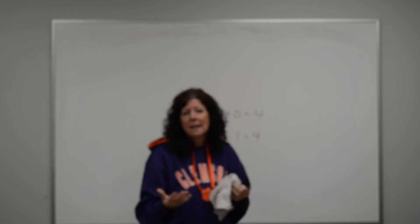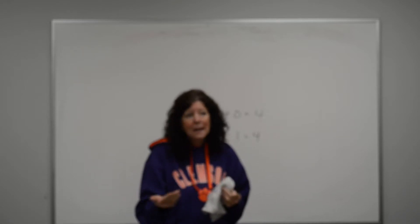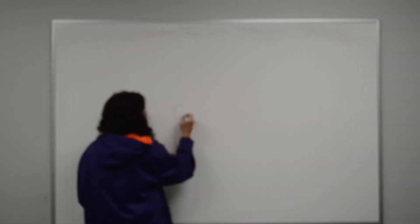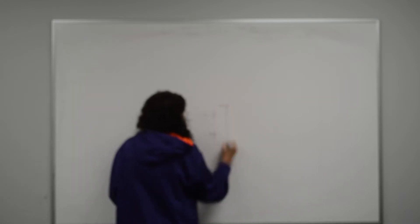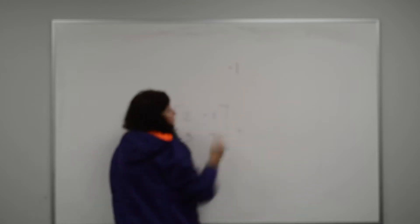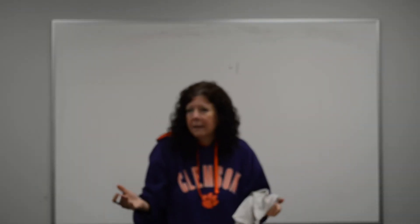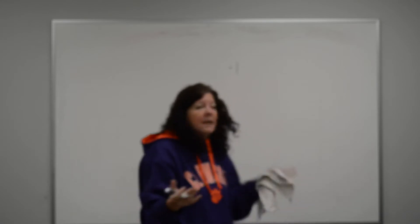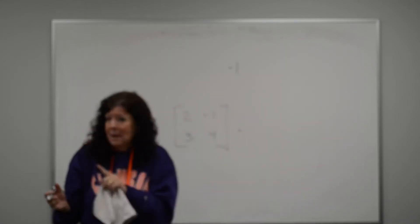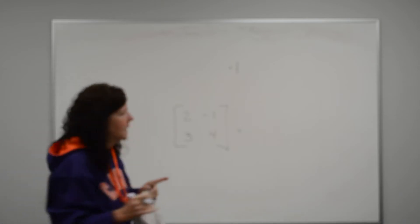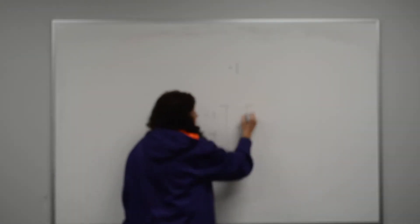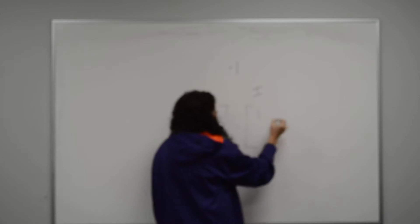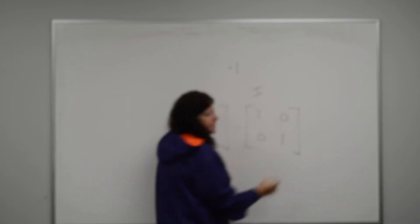Well, every matrix has an identity matrix. A matrix that if you multiply by it, it's not going to change its identity. So let's say I have a 2 by 2 matrix. Anything I multiply a number by that I want to maintain its identity, I'm always going to multiply by 1. Same thing here. There's always a matrix where the identity of that matrix doesn't change. We call it the identity matrix or an I. Every single time it looks like that, if it's a 2 by 2.